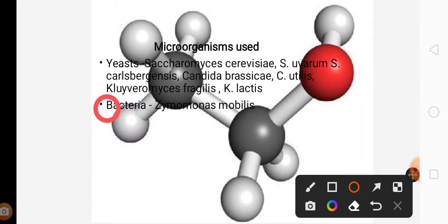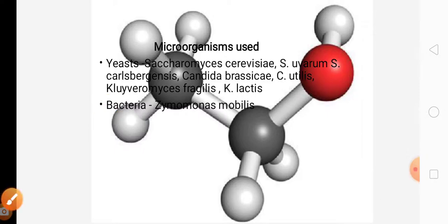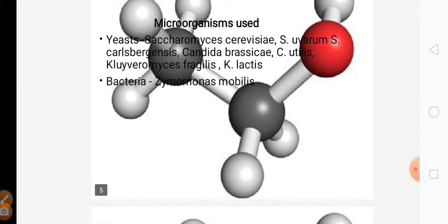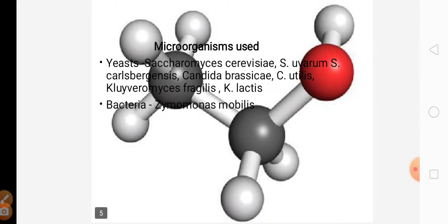In bacteria, Zymomonas mobilis is the bacteria which is used for the production of ethanol. For our commercial production of ethanol, Saccharomyces cerevisiae is the widely used microorganism. Saccharomyces uvarum has also been used at the industrial level for production of ethanol.